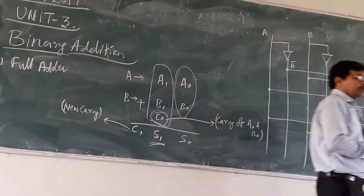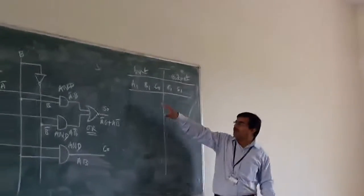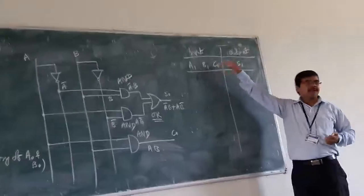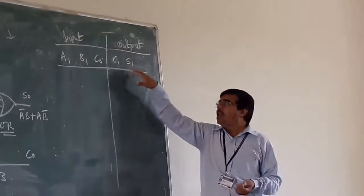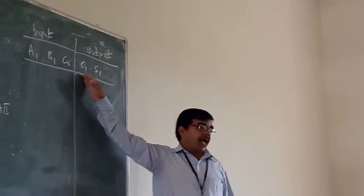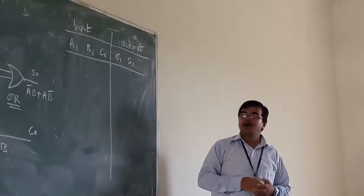And if we are going for making the truth table, you will have this as the truth table. In this truth table, you are having A1, B1 and C0. So these three will become the input. And in the output term, you are having C1 and S1. C1 is for carry, this is the new carry, and S1 is your sum.